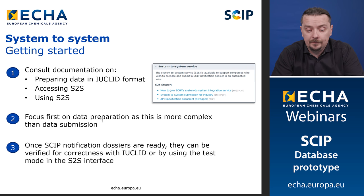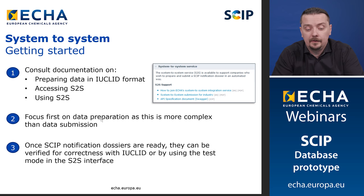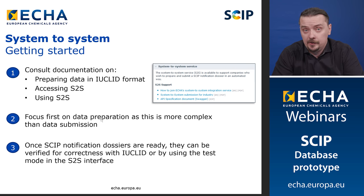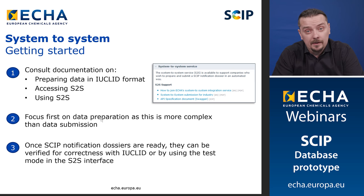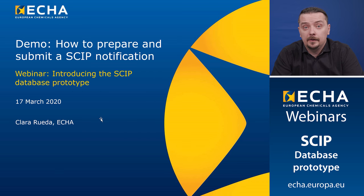How to get started with system-to-system: first, consult our available documentation. Put effort into figuring out how to prepare data according to the IUCLID format outside of using IUCLID. Learn how to access and use the system-to-system service. A good hint is to focus first on data preparation, as this is much more complex than the data submission part. Once you have successfully prepared dossiers from your own system, they can be validated by uploading into IUCLID, or you can use the system-to-system in test mode to make sure everything will be successful before submitting for real. That concludes my presentation about the SCIP notification process.